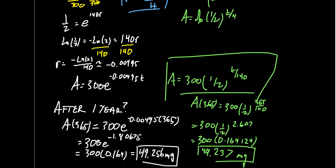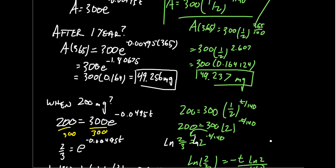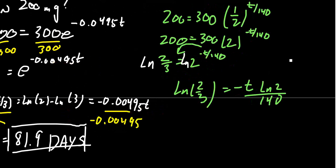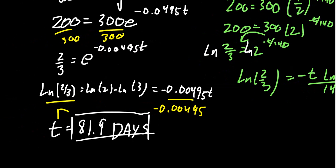The left-hand side is ln(2/3), I've seen that before. By exponential rules, you can bring this out and you end up with negative t times ln(2) over 140. Negative ln(2) over 140, I feel like I've seen that somewhere before. Oh yes, it was this rate we had before. What a shocker. The answer is going to turn out to be the same.